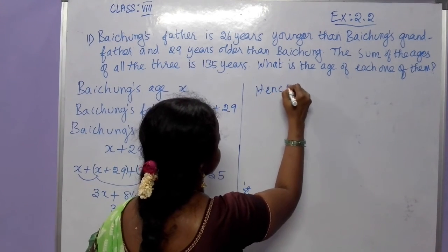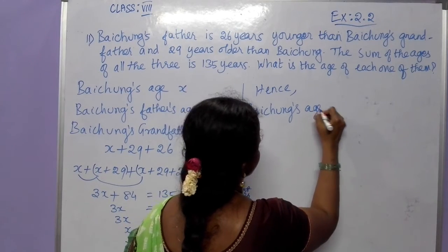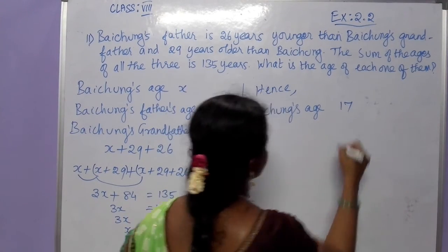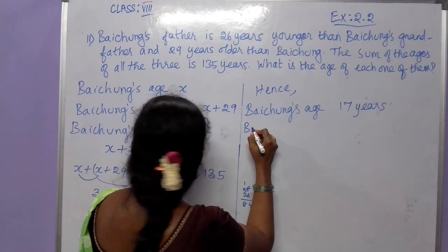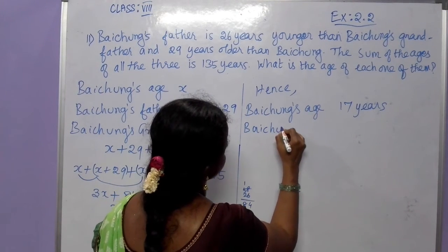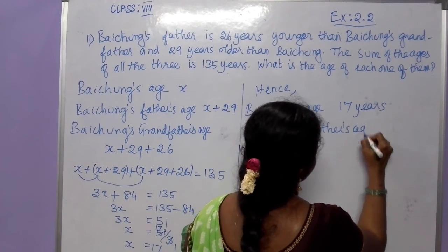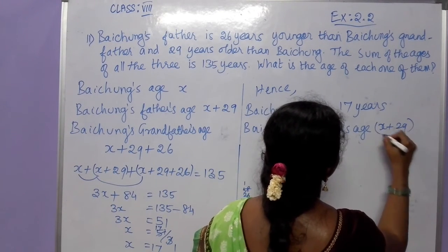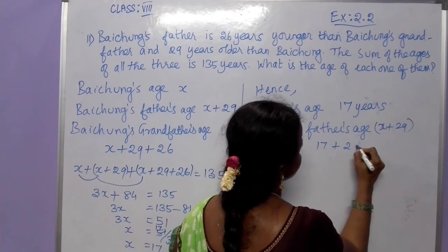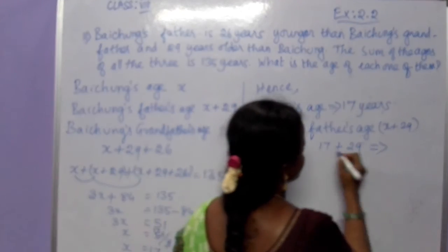Hence, Pacham's age is x, which is 17 years. Next, Pacham's father's age is x plus 29, meaning 17 plus 29. 9 plus 7 is 16, carry 1 — the father's age is 46 years.